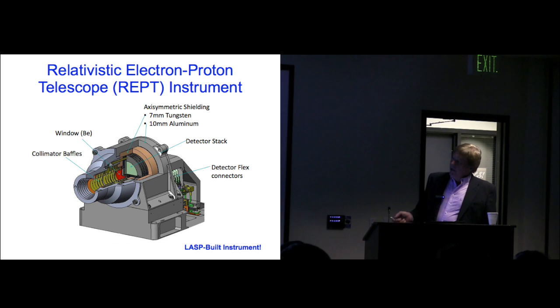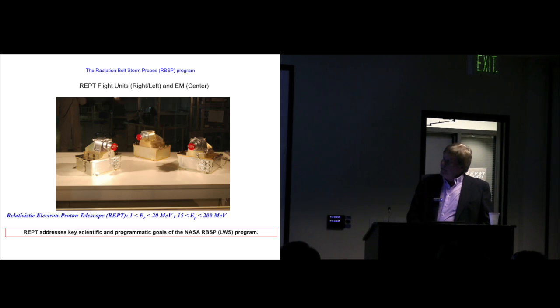LASP proposed for and won the opportunity to build what I think is one of the core instruments on the whole mission: to measure the 1 million electron volt to 20 million electron volt electrons and the roughly 10 to 200 MeV protons from the sun, solar energetic particles, and to do that in a much better way than has been done before. These are the husky instruments that resulted using the latest in passivated silicon solid-state detector technology for the basic telescope, using massive amounts of tungsten and aluminum to shield the sides to get very clean measurements.